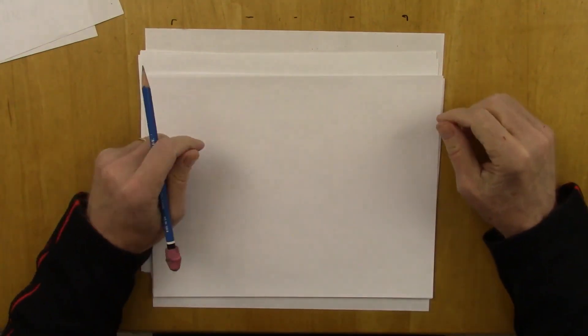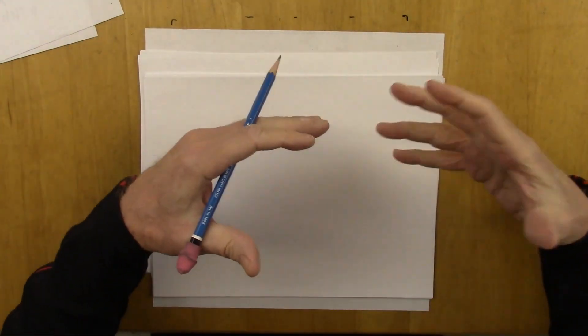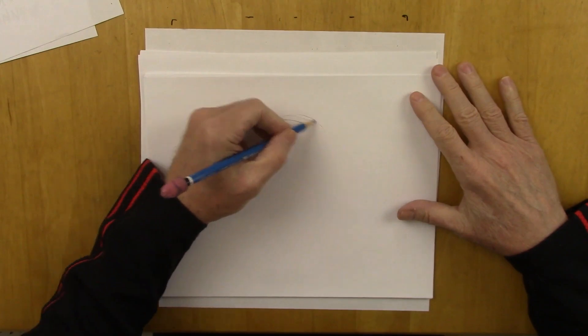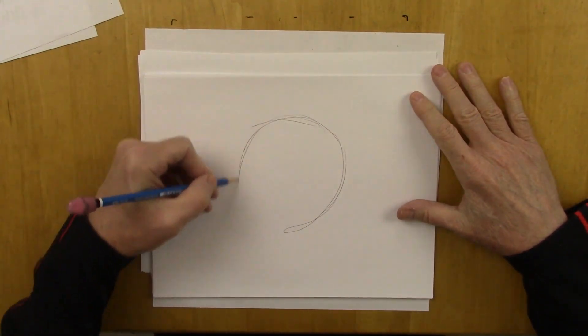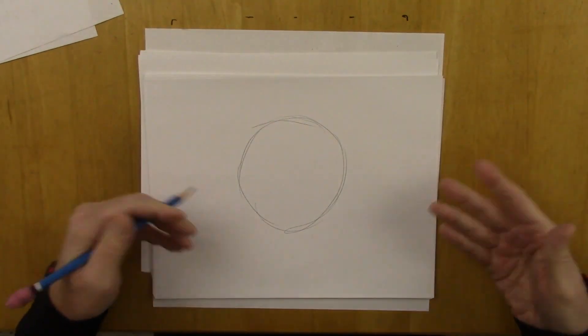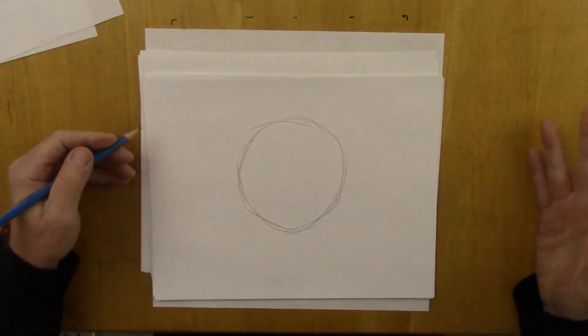For instance, I always hear people say, I can't start with a circle. I don't know how to draw a perfect circle. Okay, so let's start without a perfect circle. Let's just draw something like that. That is not an exact circle, and it's fine.